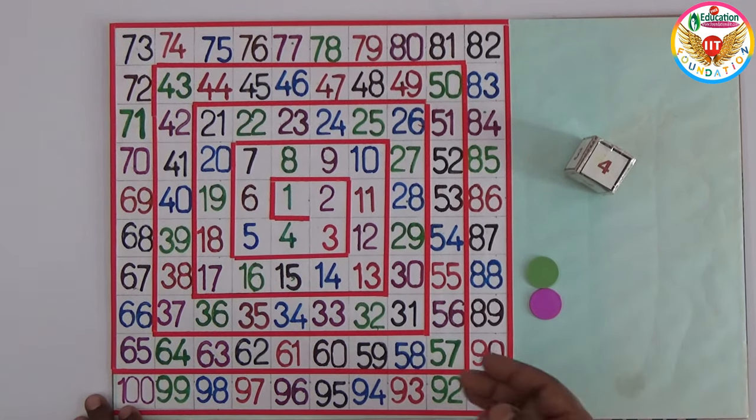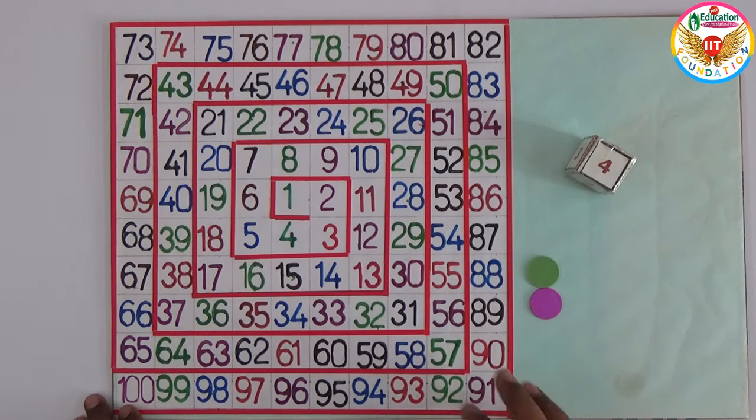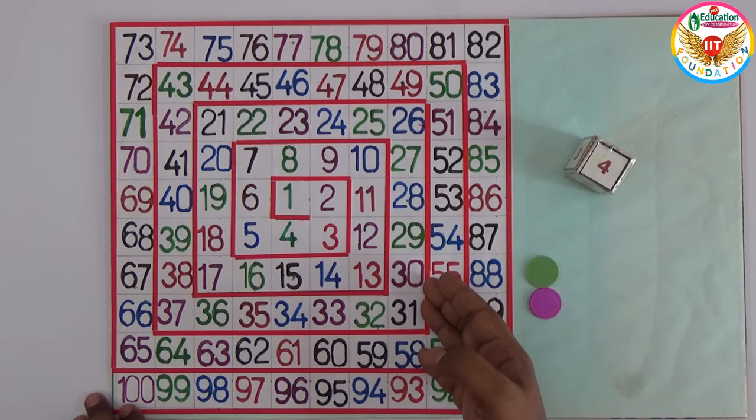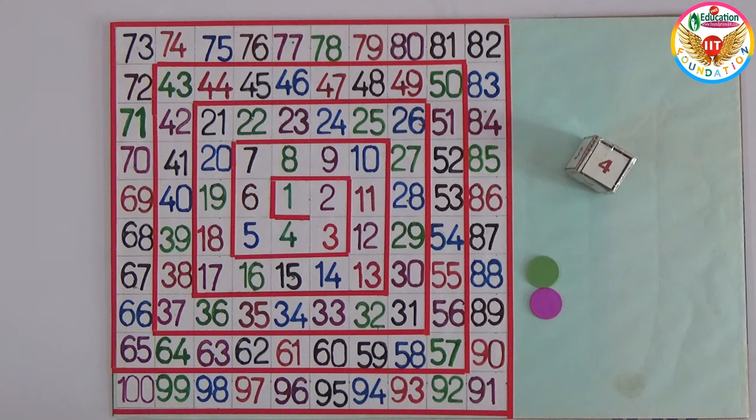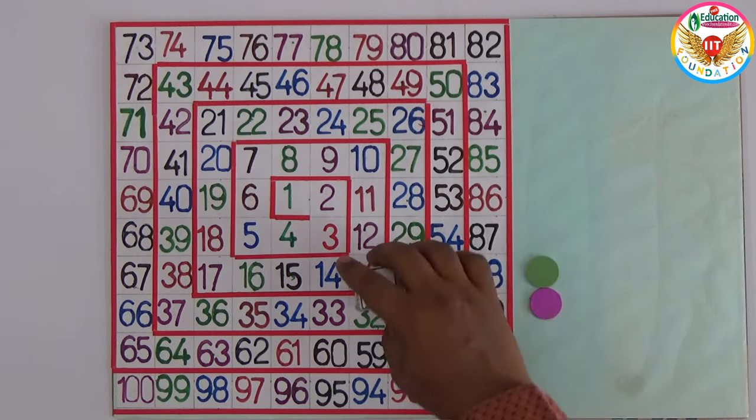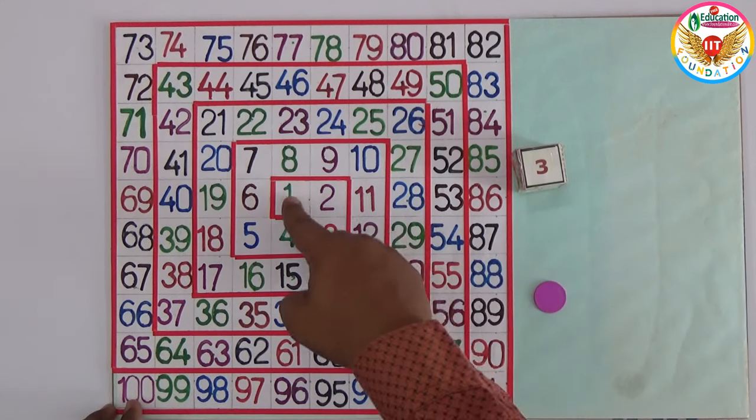Or even numbers. For example, even number chance—now one person starts playing. They get three: one, two, three. Whoever gets an even number will play again. You got six.